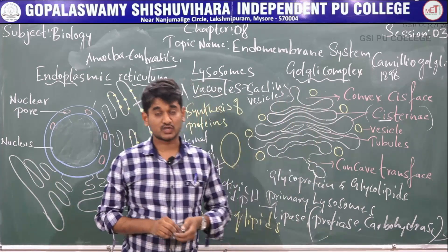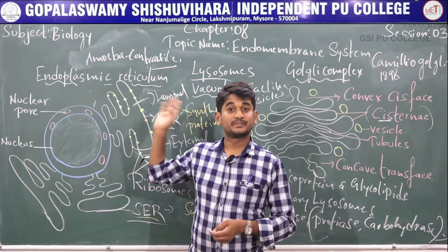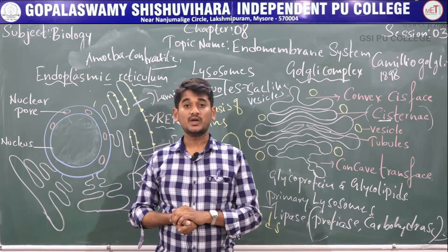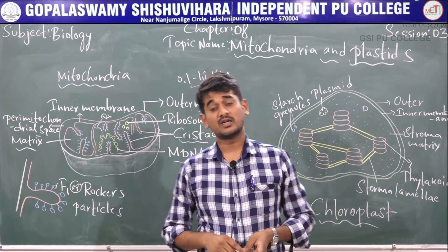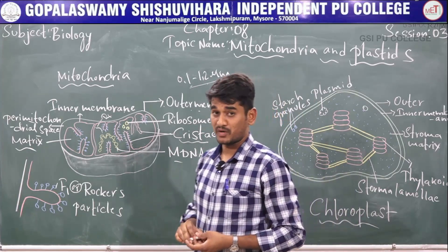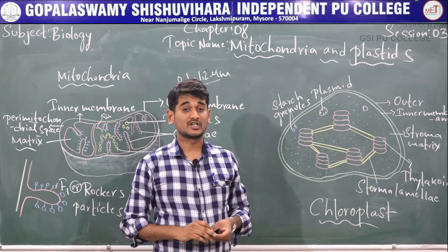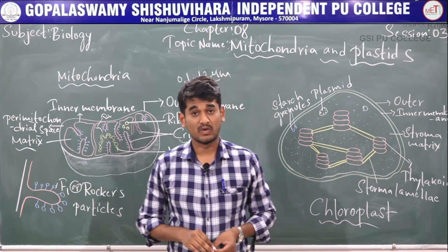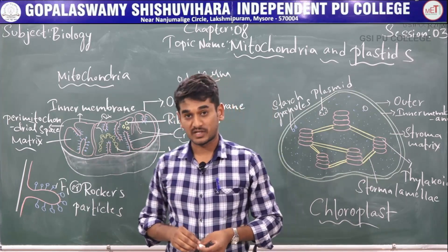The endomembrane system includes endoplasmic reticulum, Golgi complex, lysosomes, and vacuoles. The next one is mitochondria. Students will know that mitochondria are commonly called the powerhouse of the cell because they release energy in the form of ATP. Unless specifically stained, mitochondria are not visible under the microscope. The number of mitochondria is variable per cell, and is dependent on the physiological activity of the cell.